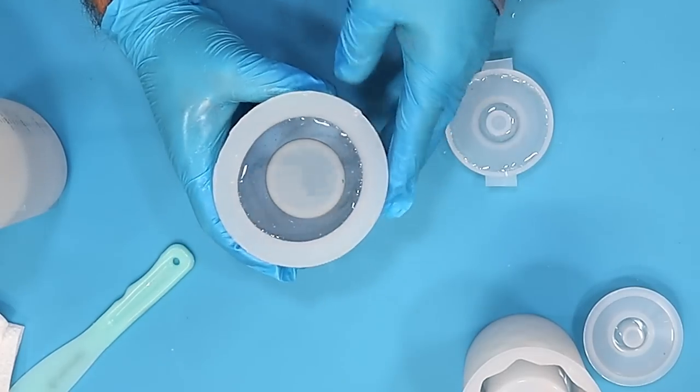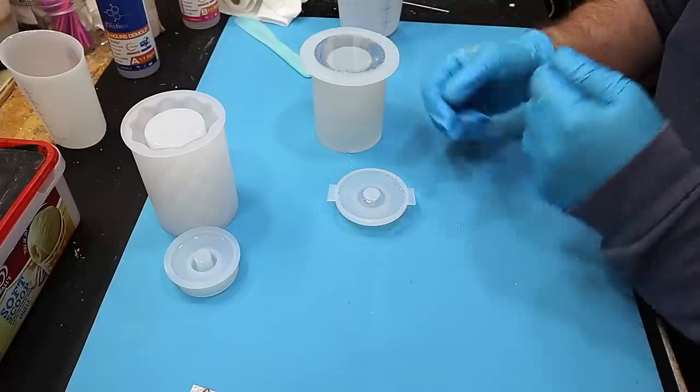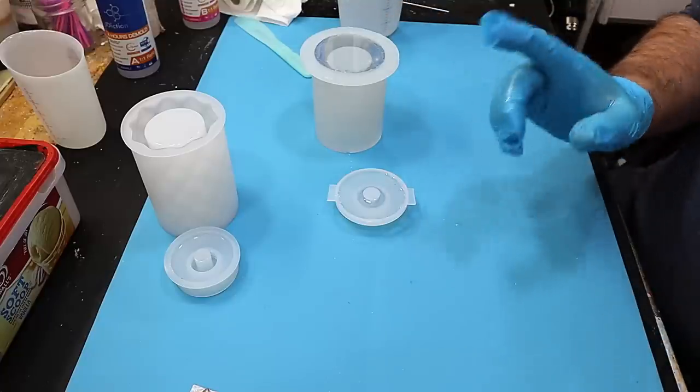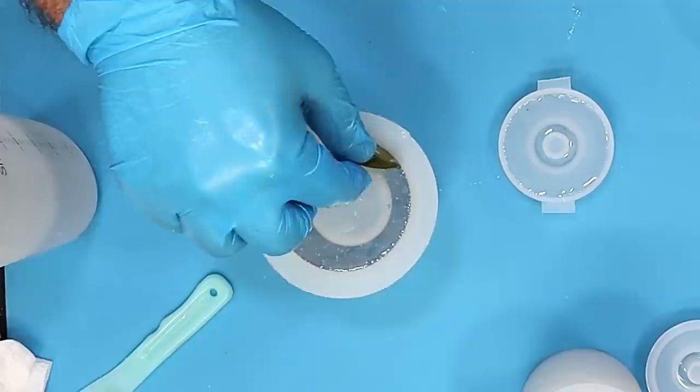I've got my resin mixed up and I've poured it in here. And what I hope to be able to do here is trap some bubbles. I know that's very unlike me, but I would really like to trap some bubbles in this because I think the bubbles are going to look nice.